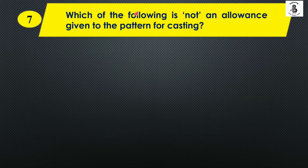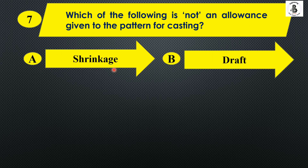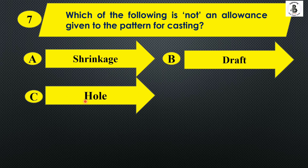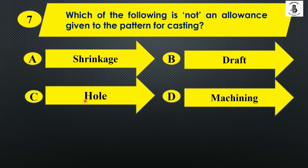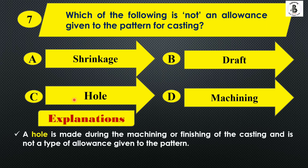Which of the following is not an allowance given to the pattern for castings? Option A: shrinkage, Option B: draft, Option C: hole, and Option D: machining. A hole is made during the machining or finishing of the castings and is not a type of allowance. Shrinkage, draft, and machining are all types of allowances generally given to pattern materials. So the right answer is Option C, hole.